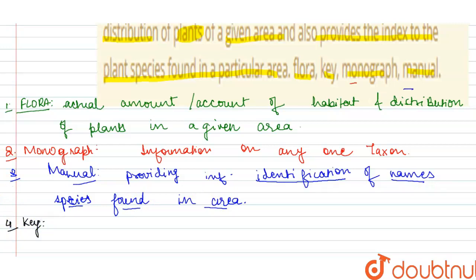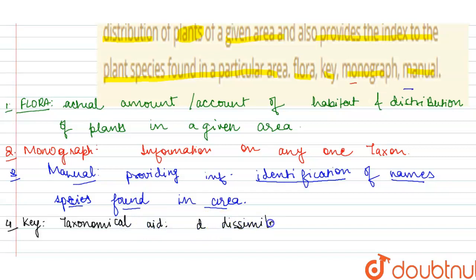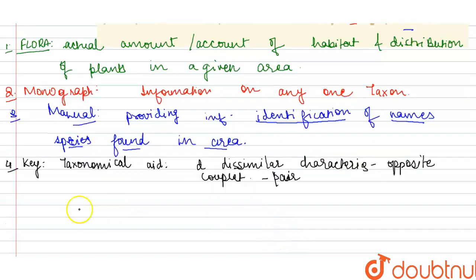The most important one is the key. Key is used as a taxonomical aid. Key is based upon two different or dissimilar characters, and these characters are opposite to each other — hence they are known as a couplet. They are present in pairs, and we can either select or reject a character in the case of a key.